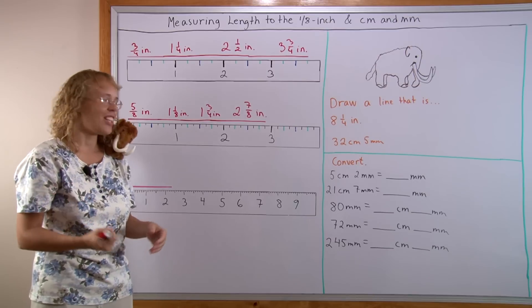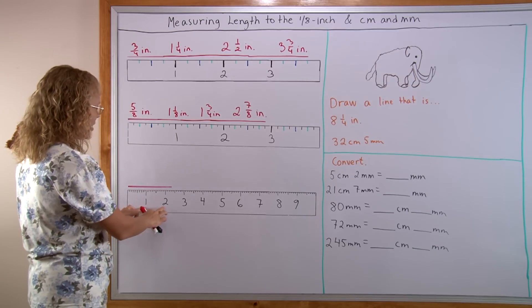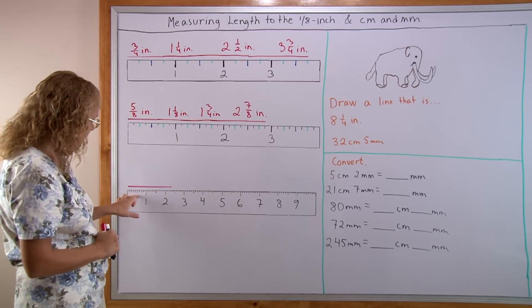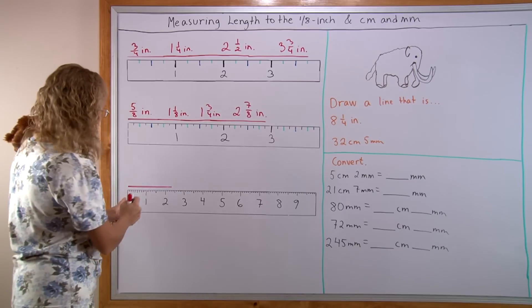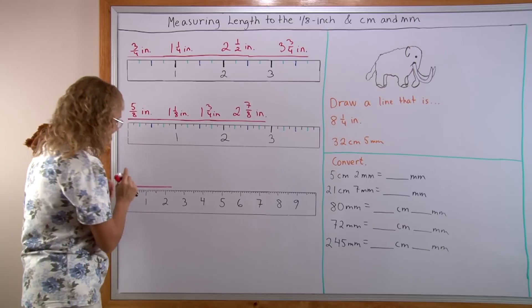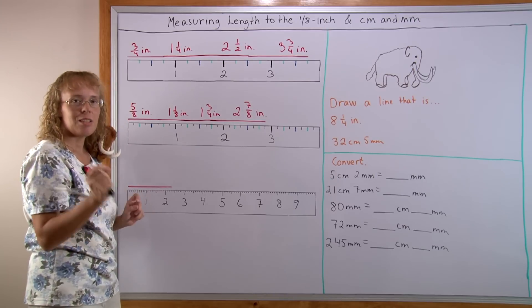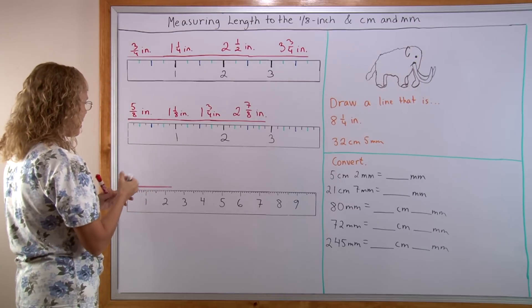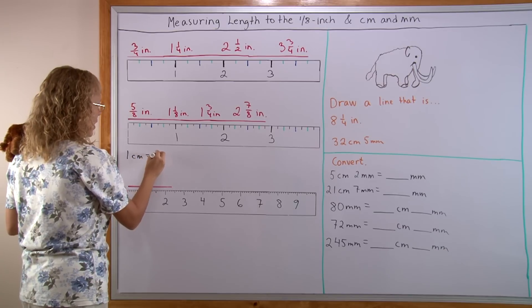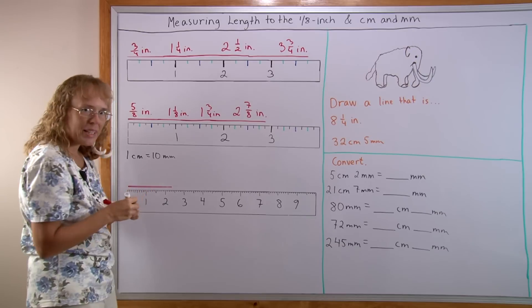But it is so that you can see it on the video clearly. These are marks for the whole centimeters. Then these little things here are for the millimeters. There's 10 little millimeters in each centimeter. Remember that. 10 millimeters in 1 centimeter.